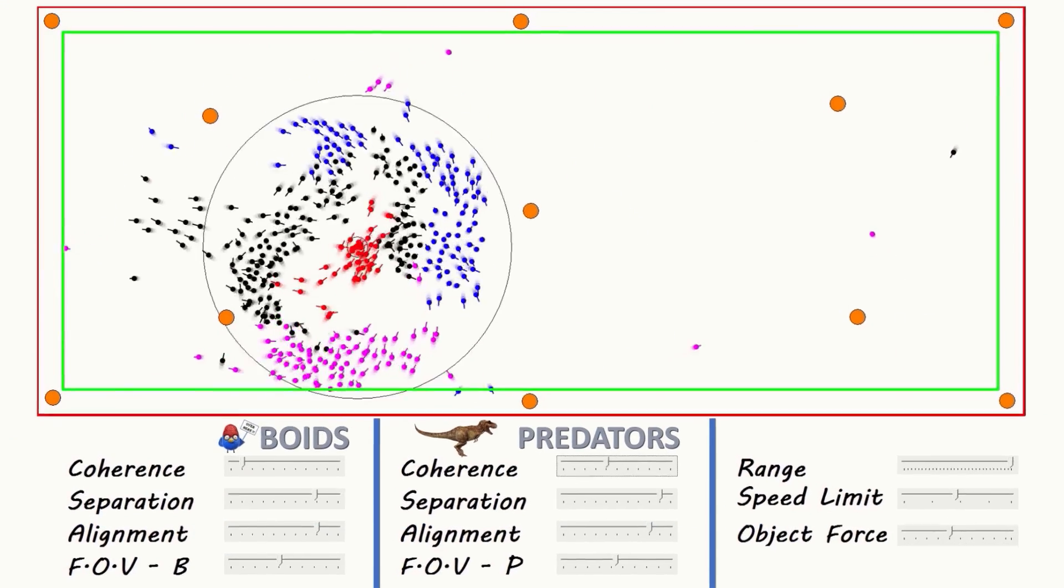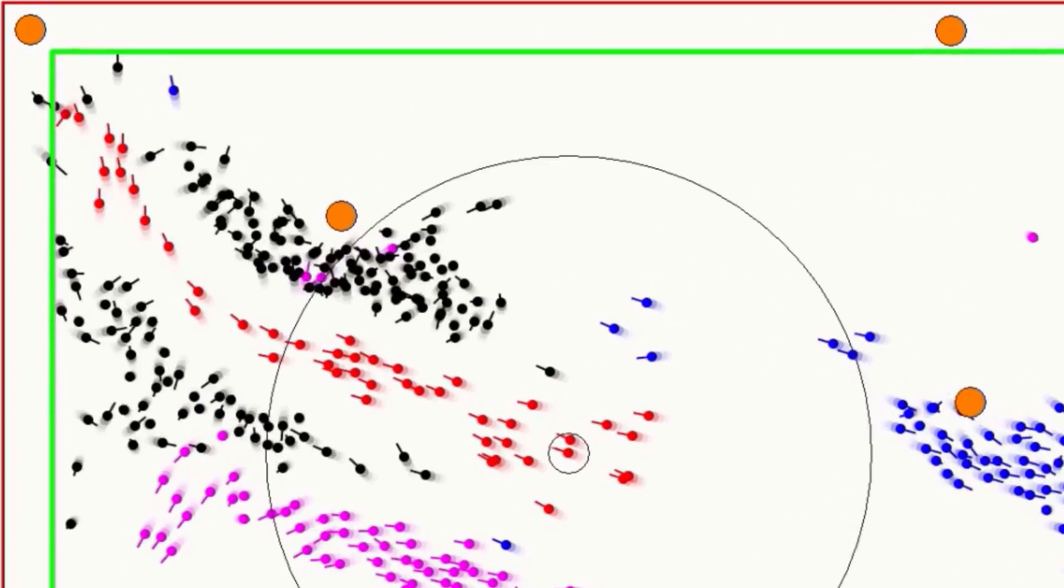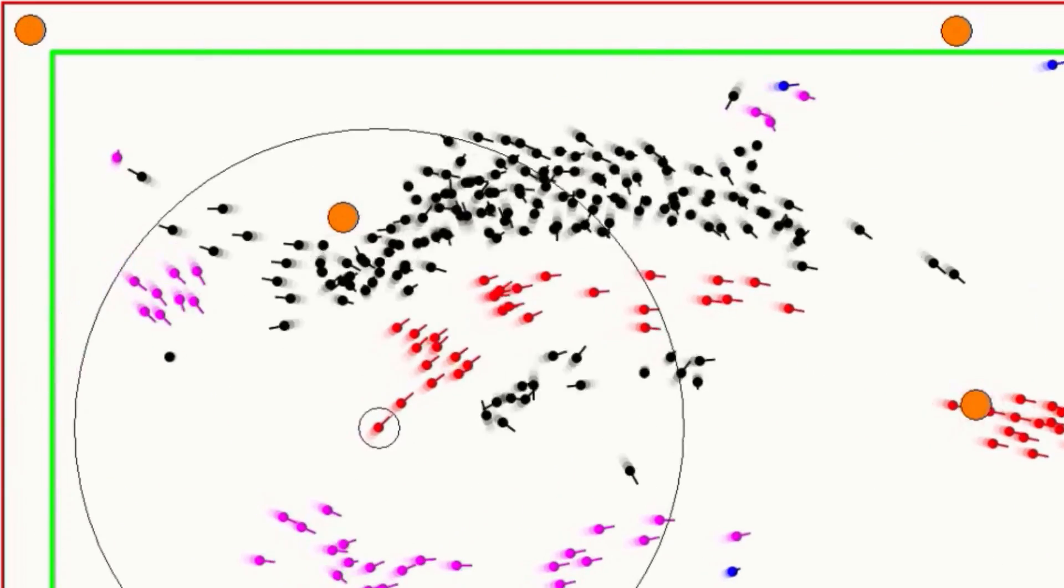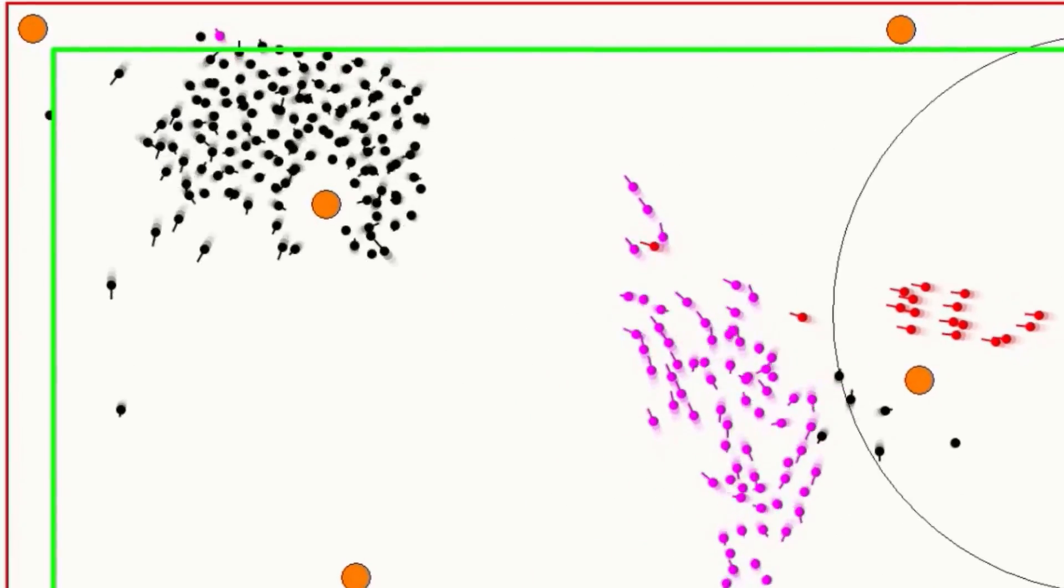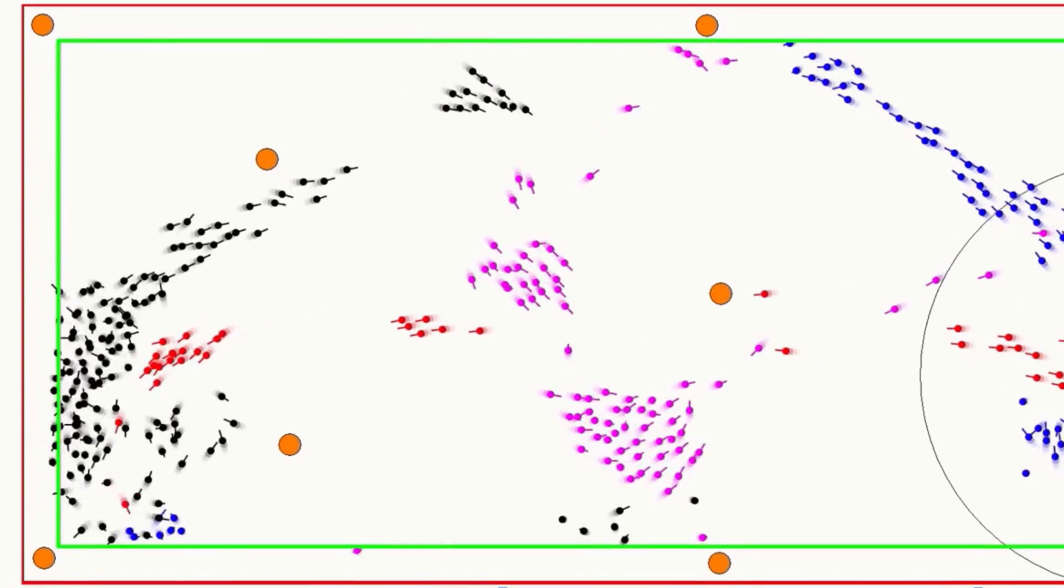The thing about Boids is that you can never have enough of them. You start with 10 just to get things going and code up the basic interactions. Then you want 20 to see more detail, then it's 50, then 100 to get a decent sized flock. Then it's 200 because of course you want multiple flocks, throw some predator boids and object avoidance into the mix, and you're up at 400.